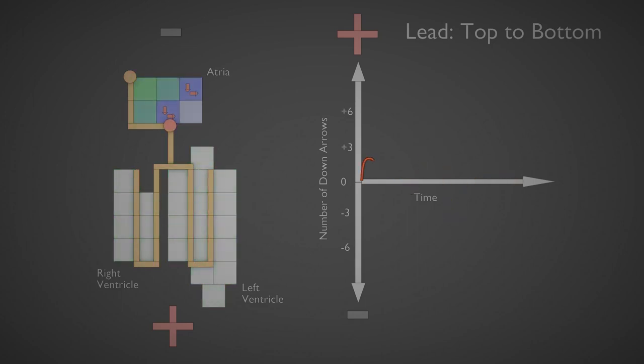The directionality component of our measurement is limited to one dimension. Only vertical change matters in this view. If it's not moving toward or away from our positive electrode along a line or a line parallel to our negative electrode, we can't see it.